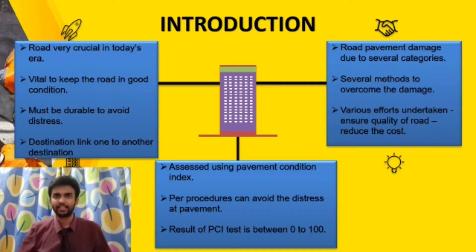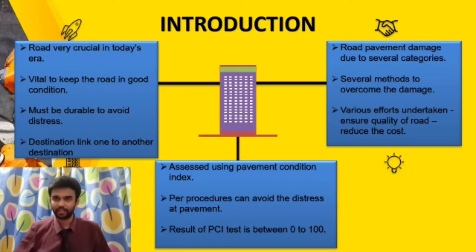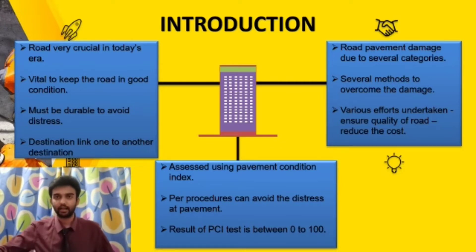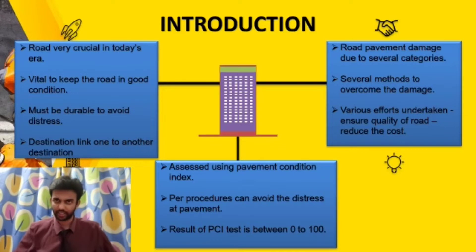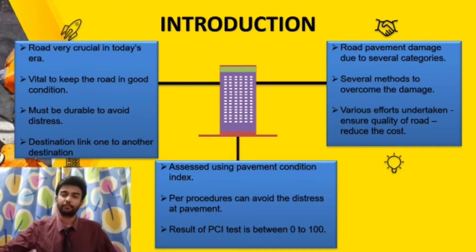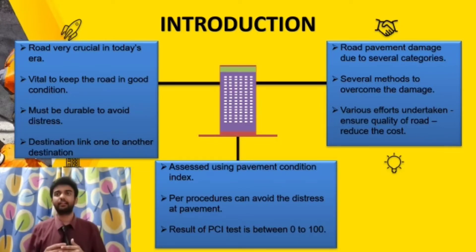Pavement damage can be divided into six categories: pavement crack, surface deformation, surface defect, edge defect, pothole, and patch. To overcome road damage, several methods have been introduced to facilitate more efficient maintenance and ensure better pavement management. Various efforts have been undertaken, such as studies on bituminous materials, with the aim of ensuring road construction quality and reducing maintenance costs. Pavement conditions are assessed using the Pavement Condition Index (PCI) test.